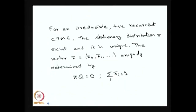The main result for the stationary distribution: whenever you have an irreducible positive recurrent CTMC, the stationary distribution exists and it is unique. There is no need for an aperiodicity condition in the CTMC, whereas for the stationary distribution of the DTMC we included the additional condition of aperiodicity. But for the CTMC, there is no periodicity for the state. Therefore, as long as the system is irreducible and positive recurrent, the stationary distribution exists, is unique, and can be obtained by solving these equations.